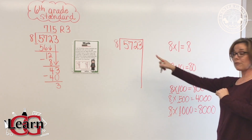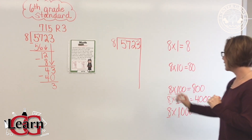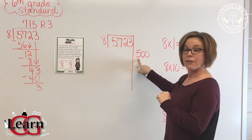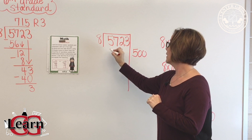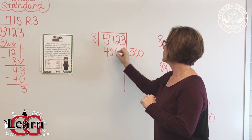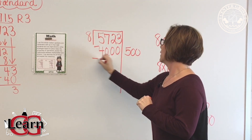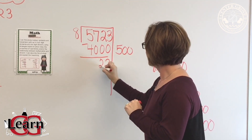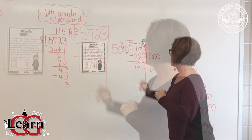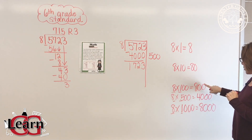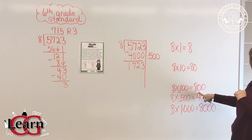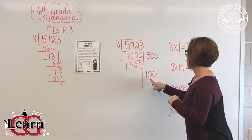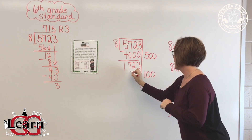Can I take 4,000 out? Yes I can. So 500 goes on the side of my Fantastic Seven. 500 times 8 is 4,000. I have to subtract. Now, looking at what I have left, can I take 800 away? I sure can. So 100 times 8 is 800.